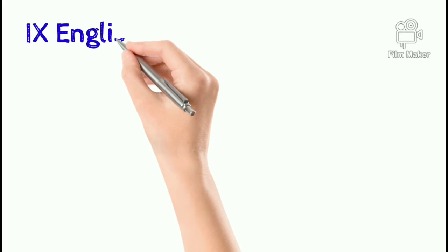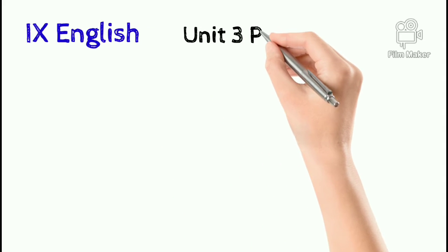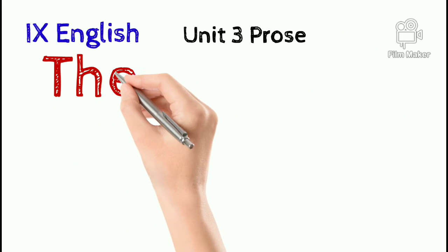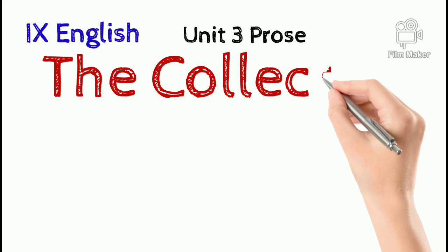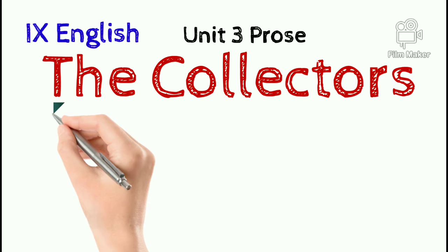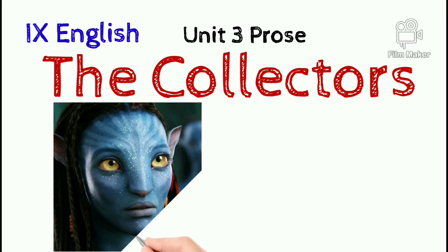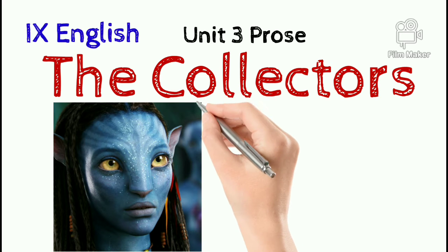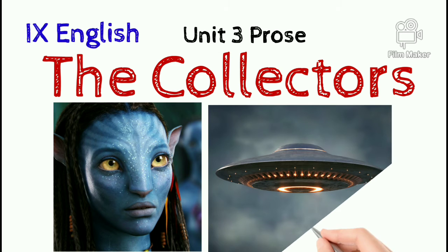Dear students, in this video I explain Unit 3 Prose, i.e. 'The Collectors.' The Collectors is a one-act play about the encounter of a group of teachers and children on an adventure walk in a lonely countryside with two aliens. The aliens have taken the form of humans, and hence the group takes shelter in their spaceship, mistaking it for a house. Those two aliens try to abduct that group of students and teachers.